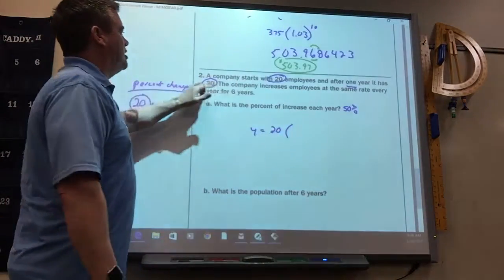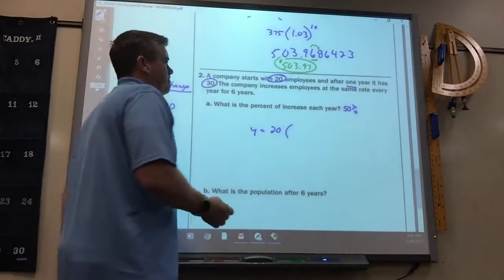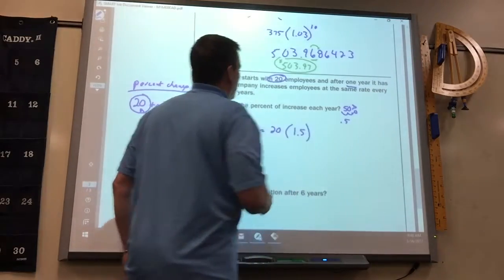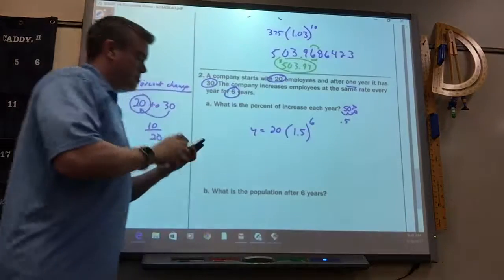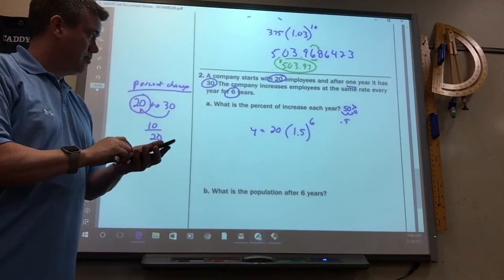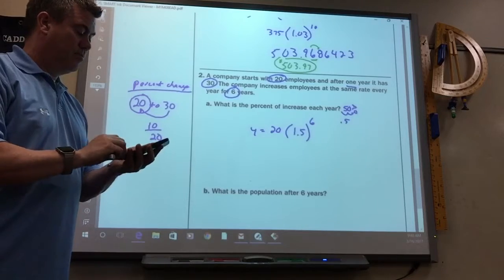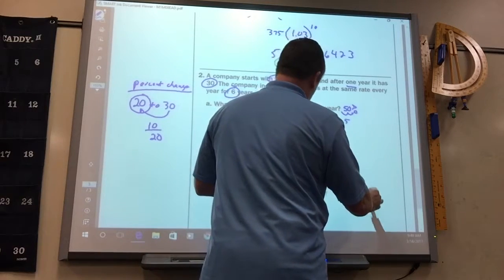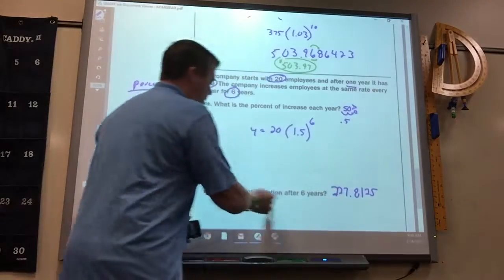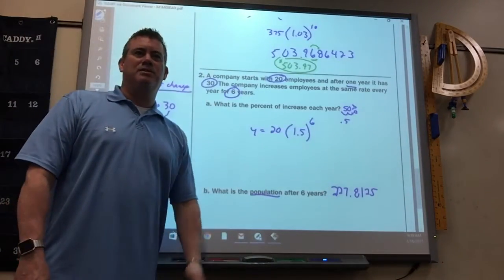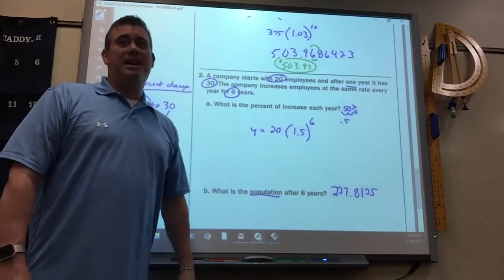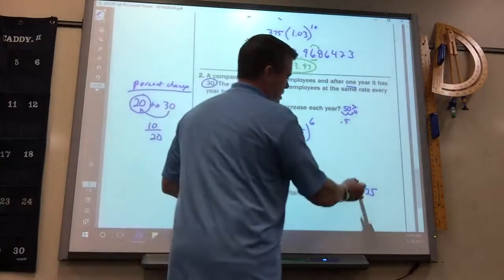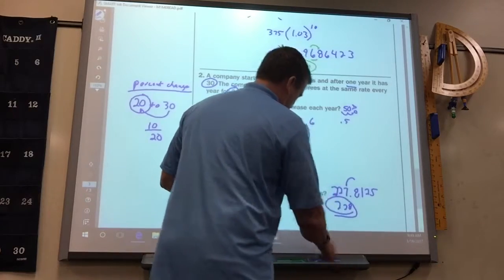So, the number that goes in here, you got to move it two spots and be 0.5, would be 1.5 raised to the sixth. And it would be 227.8125. Now, since this is a population problem, this is where you got to use some common sense. Yeah, you can't have a decimal amount of people. So, you need to know where you would round. 228, right.